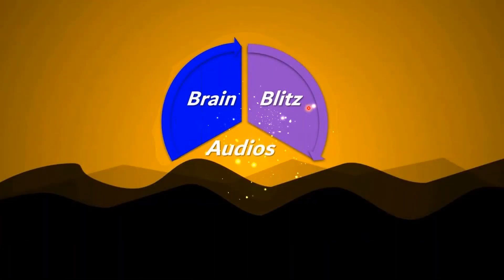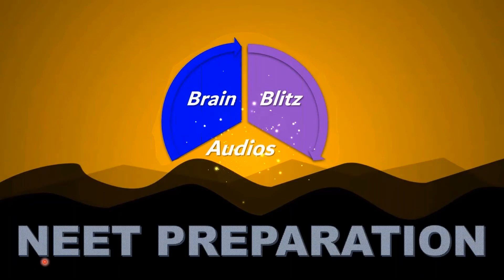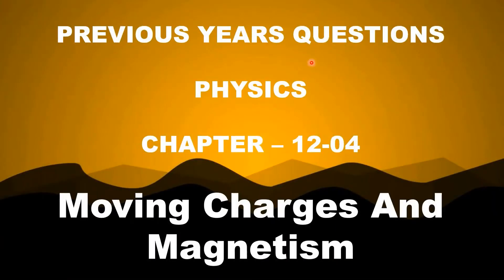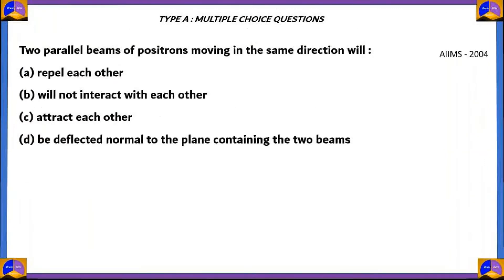Hello everyone. Welcome to Brain Blitz Audios. Today, in this episode of NEET Preparation, we'll be looking at previous year questions of physics in medical entrance examinations in India. Today, we're dealing with the chapter on Moving Charges and Magnetism. It's one of the most important chapters of grade 12 and the fourth chapter in the grade 12 CBSE physics syllabus. Let's look at our first question.